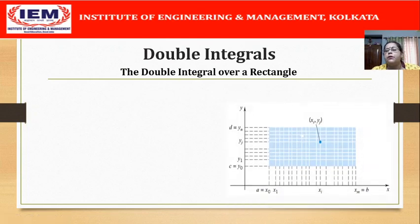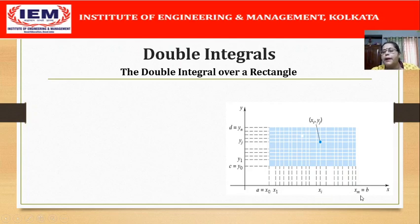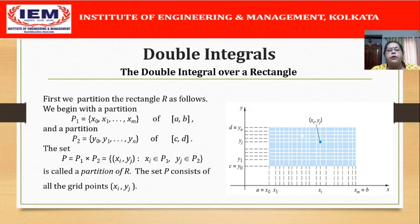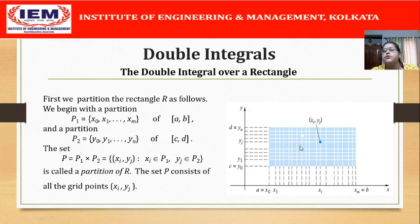Let us look into this figure. The interval [a, b] has been subdivided into subintervals by the points a = x₀, x₁, ..., xᵢ, ..., xₘ = b. And in the y direction, the interval [c, d] has been partitioned by the points y₀, y₁, y₂, ..., yⱼ, ..., yₙ. This gives us a partition of the rectangle r. This partition set p consists of the green points (xᵢ, yⱼ), and under this partition the rectangle r has been partitioned into small rectangles.